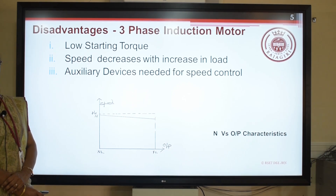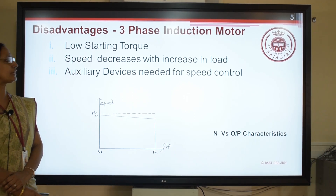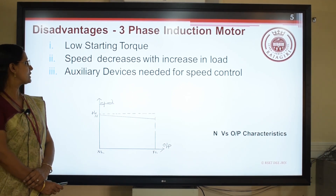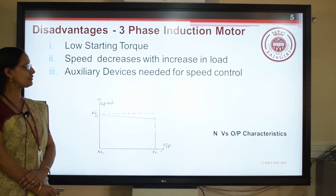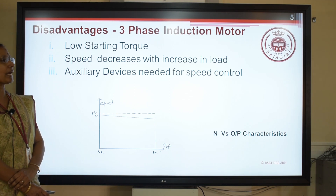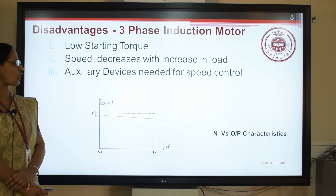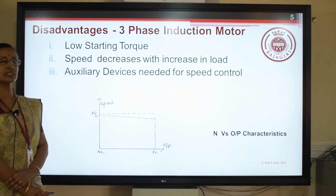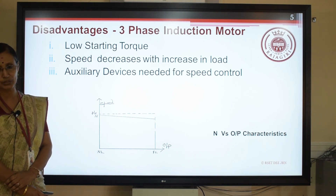It is considered almost a constant speed motor as evident from the speed-output characteristics. Following are the disadvantages: low starting torque, speed decreases with increasing load, and it requires auxiliary devices needed for speed control.